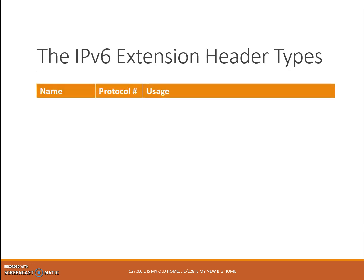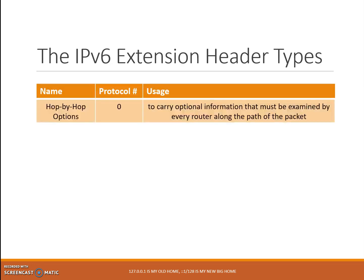There are currently six extension headers. Number one: hop-by-hop options, protocol number zero, used to carry optional information that must be examined by every router along the path of the packet. Number two: routing extension header, protocol number 43, allows the source of the packet to specify the path to the destination.